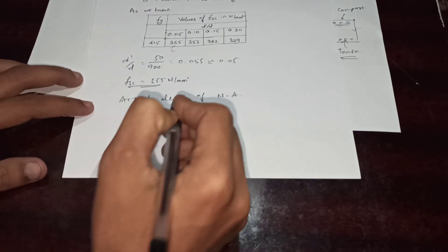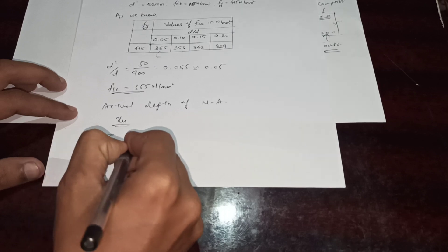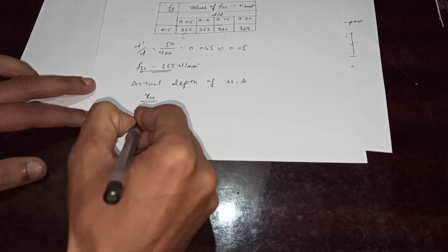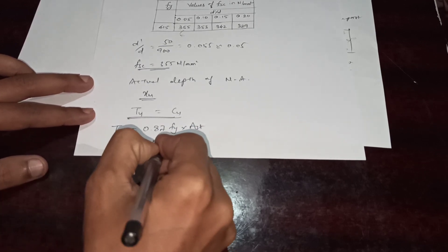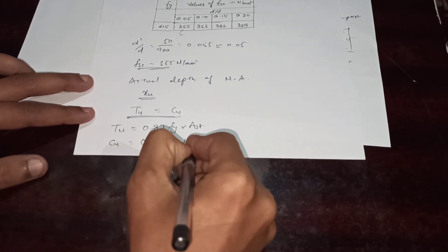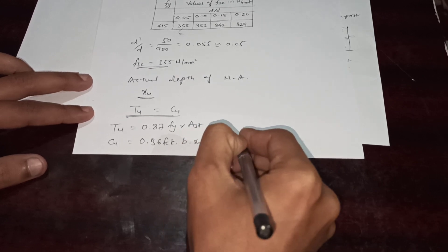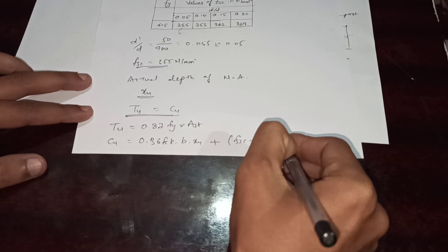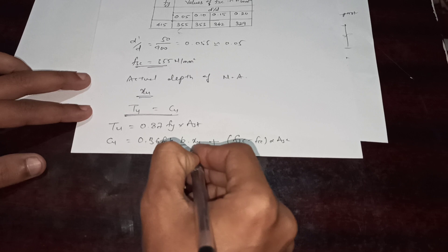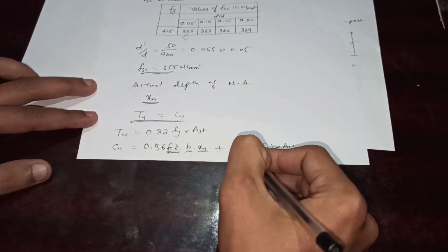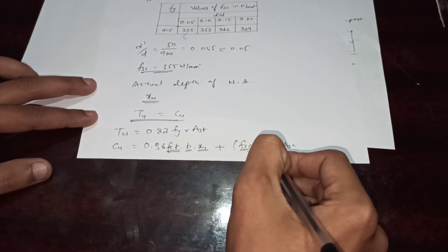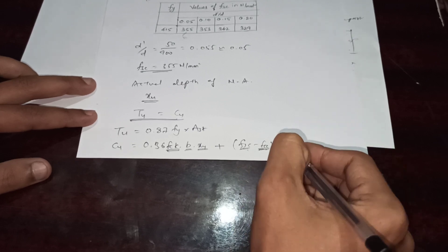First we calculate the actual depth of neutral axis XU. To solve for XU, we equate total tensile force with total compressive force. In a double reinforced section, total tensile force Tu equals 0.87 × fy × AST, and total compressive force equals 0.36 × fck × b × XU plus (FSC minus FCC) × ASC, where FSC is the compressive stress in compression steel and FCC is the compressive stress in concrete at the level of compression reinforcement.